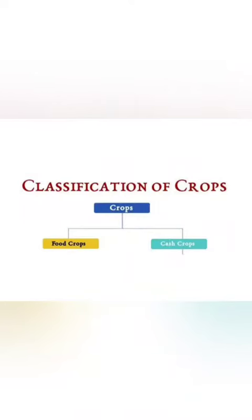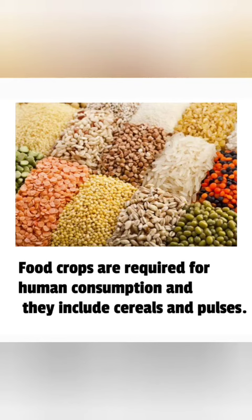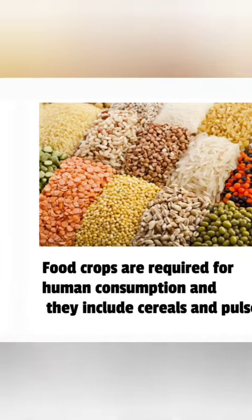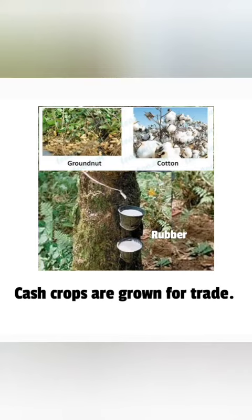There are two major types of crops: food crops and cash crops. Food crops are the crops that are grown for human consumption; they include cereals and pulses. Cash crops are the crops that are grown for trade — for example, groundnut, coconut, rubber, etc.